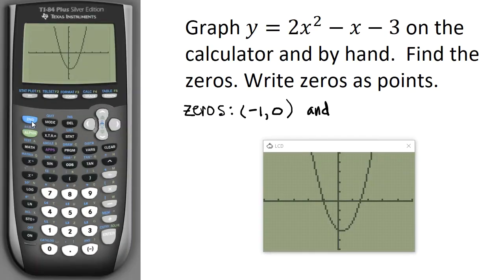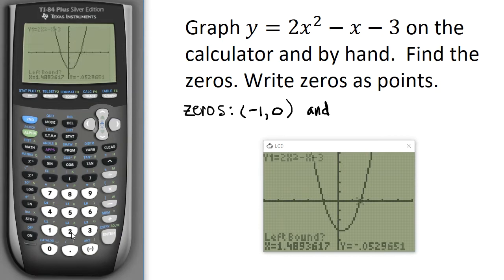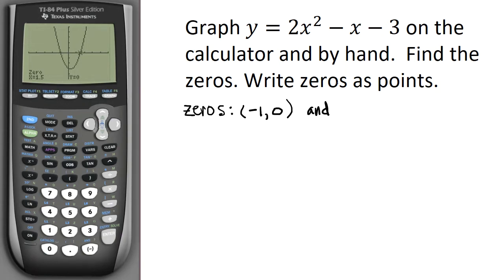Now let's find the other zero, so second Calc. Again I want to choose zero. And I need the left bound, so I need that a little bit to the left of where I think the zero is. And again I need the right bound. And I read the screen to see what's happening, right bound, and I hit Enter. And then I want to take a guess, so I'm going to either use the left or the right arrows to get close. It doesn't have to be exact. And I see my second zero there is x = 1.5.